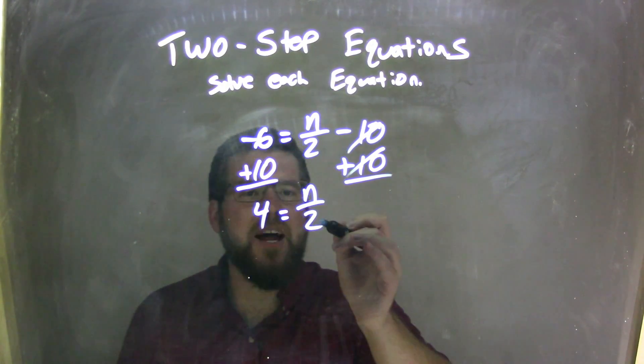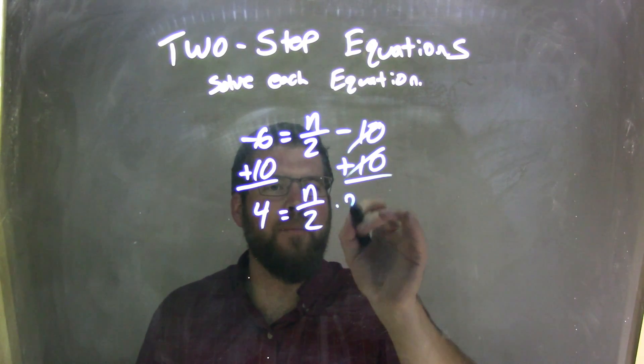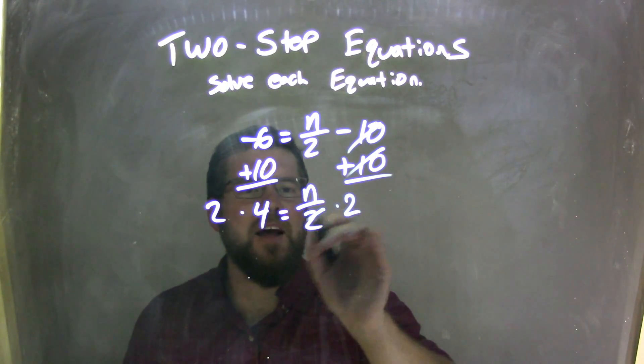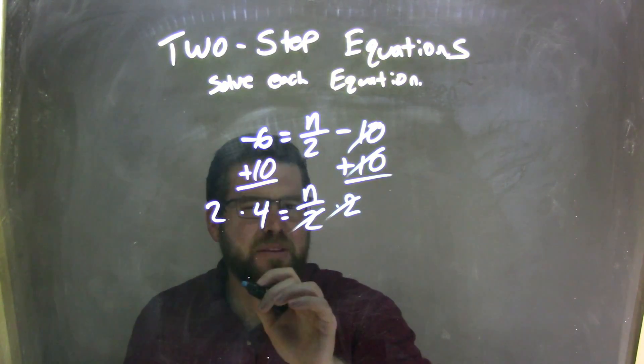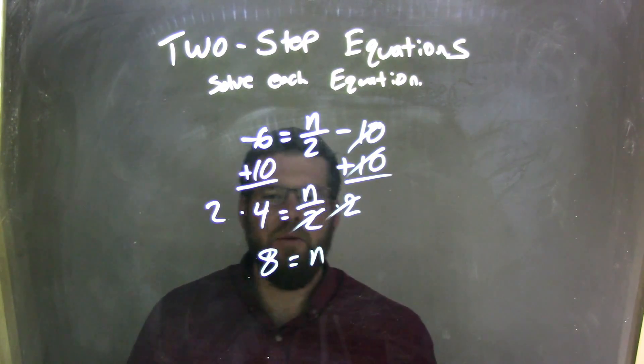I have n divided by 2, and the opposite of division is multiplication, so I'm going to multiply by 2 on both sides. The 2s cancel, leaving me with 2 times 4, which is 8, and n on the right.